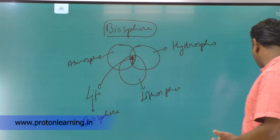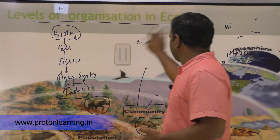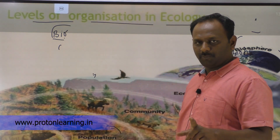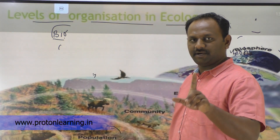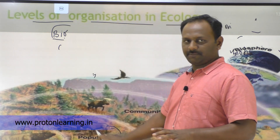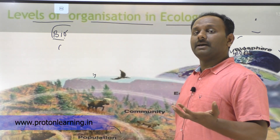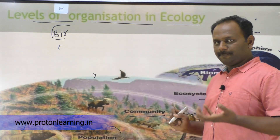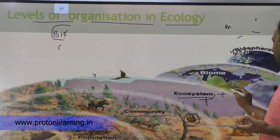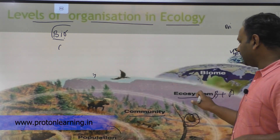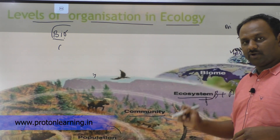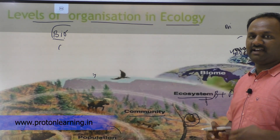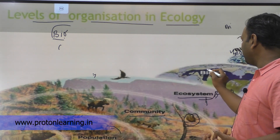These are the different levels of ecology. Here we have individual — one organism. Population means the group of organisms of the same species. Community is the biotic components of the ecosystem or the environment. Ecosystem is biotic components plus abiotic components of the environment. Biomes are terrestrial ecosystems where similar type of climatic conditions are prevailing and similar type of organisms are found.